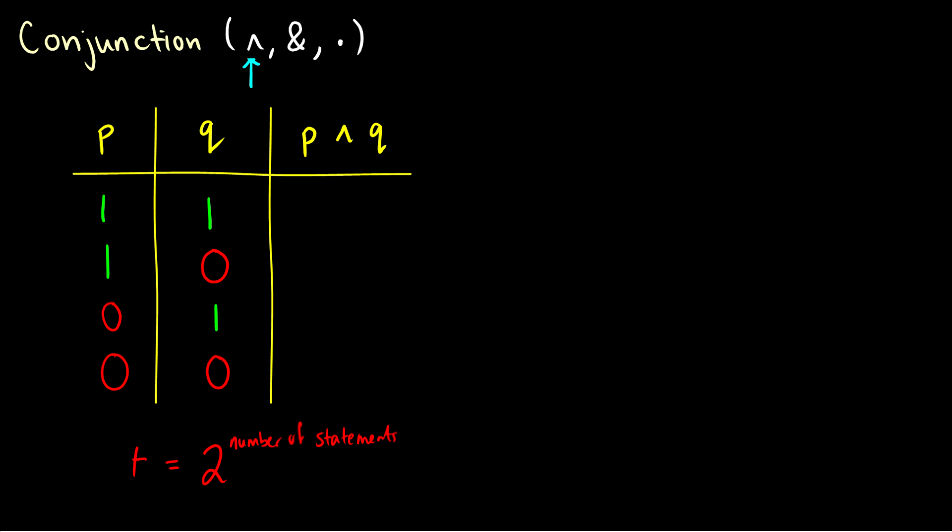Now what does p AND q do to the truth value? Well, p AND q is true only if p is true and q is true. So it's only true in the first scenario where both p and q are true. In every other scenario it is false.